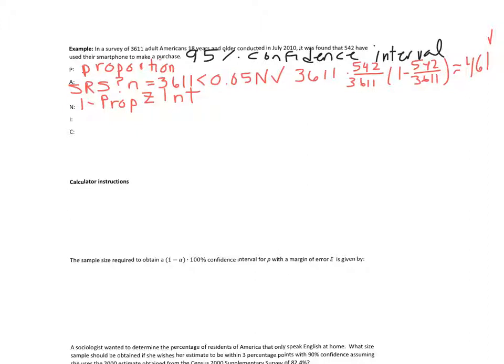Okay, so fill in all that information. State your confidence level. N is 3,611. X is 542. Confidence is 0.95. And when you do all that, here's our interval.